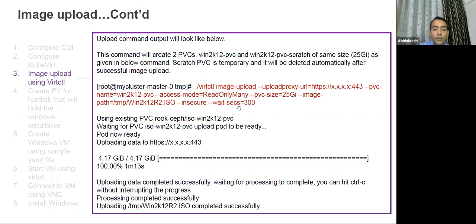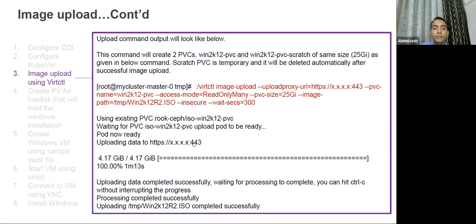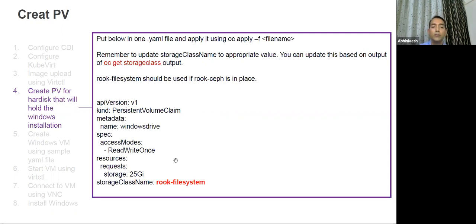Once the image is uploaded, it is stored in a pod. For the PVC creation — if you're using Rook with Ceph, create the PVC like this. To find out which storage class to use (highlighted in red), run 'kubectl get storageclass' and select the appropriate storage class.